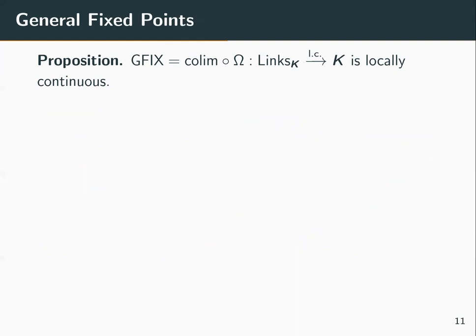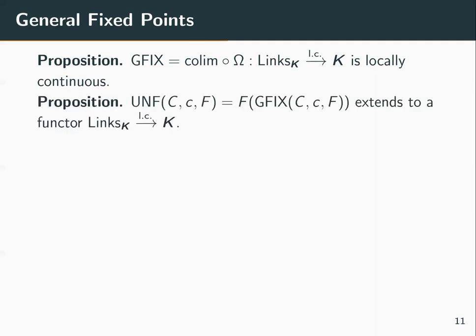Assuming that K has all the needed omega colimits and we've chosen one for each omega-chain, we can define a generalized fixed point functor — just the composition of the colimit functor with the functor Ω — and this functor will be locally continuous.